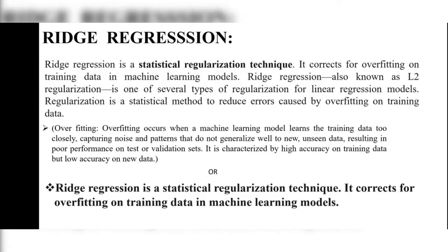Overfitting occurs when a machine learning model learns the training data too closely — capturing noise and patterns that do not generalize well to new, unseen data — resulting in poor performance on test or validation sets. It is characterized by high accuracy on training data but low accuracy on new data.